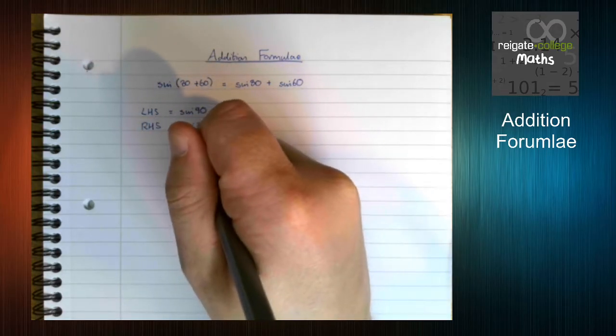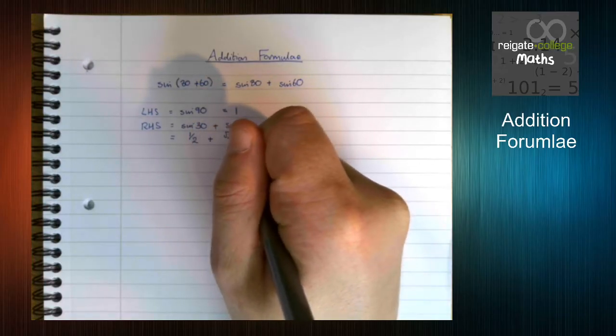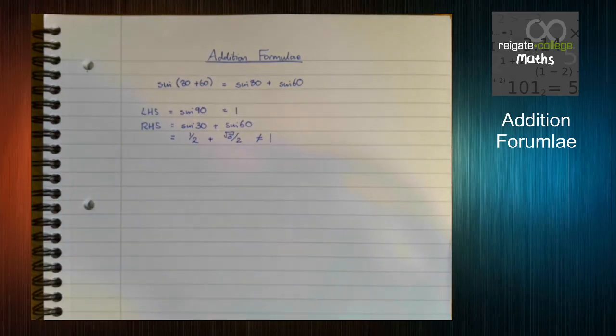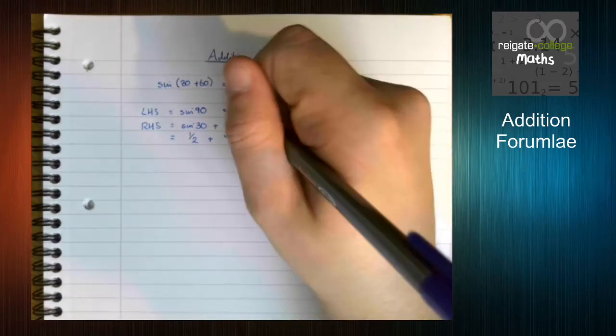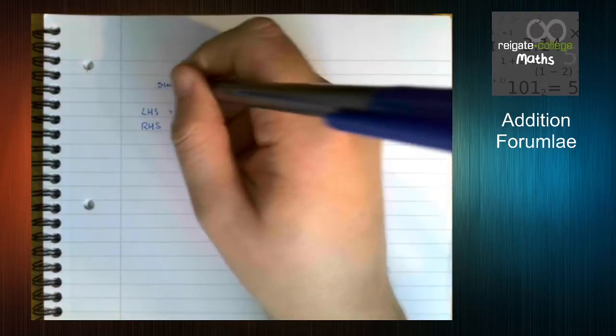Now we know that sine 30 is a half. Sine 60 is root 3 over 2, which is definitely not equal to 1. If you don't believe me, type it in your calculator. This is an error. This is a common misconception, so don't do this.